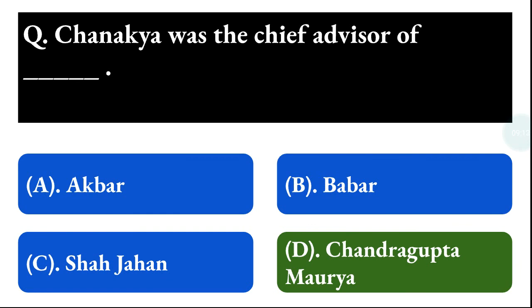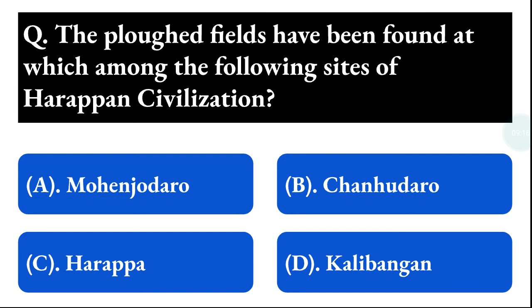Next question: the dockyard has been found at which among the following sites of Harappan civilization? Option A: Mohenjo-daro, option B: Dholavira, option C: Harappa, option D: Kalibangan. The correct answer is option D, that is Kalibangan.